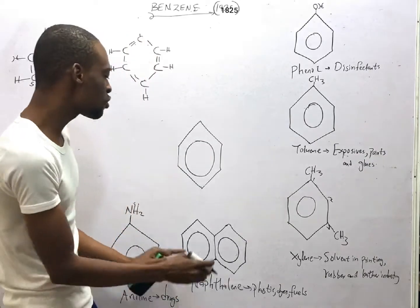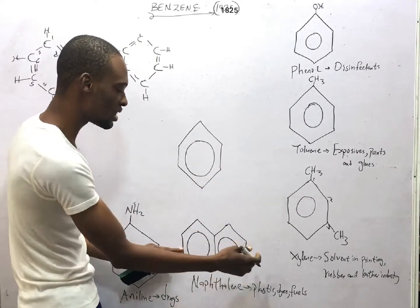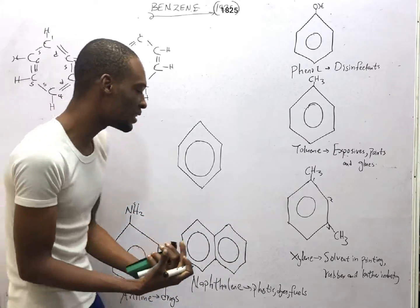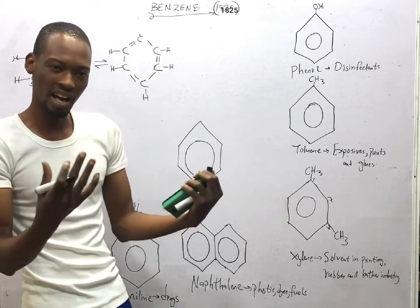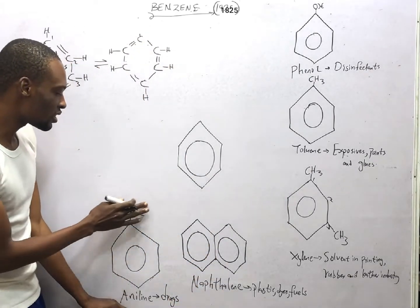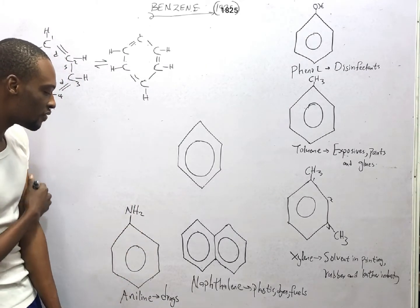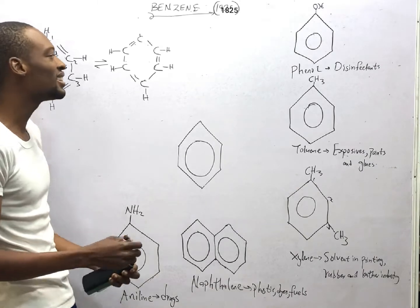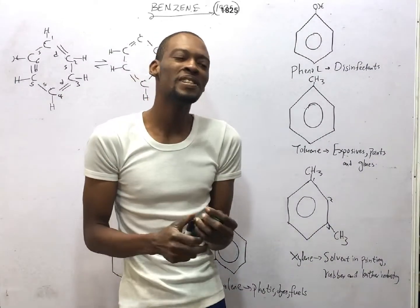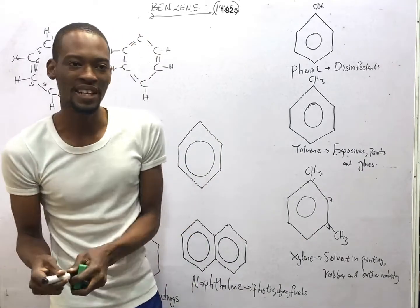If you see two benzene rings come together, you refer to them as naphthalene, and naphthalene is used in plastics, dyes, and fibers. Then finally, aniline — when you see NH2 attached to benzene, it forms a derivative called aniline, and aniline is used in drugs. Benzene undergoes electrophilic substitution reactions and also undergoes addition reactions.